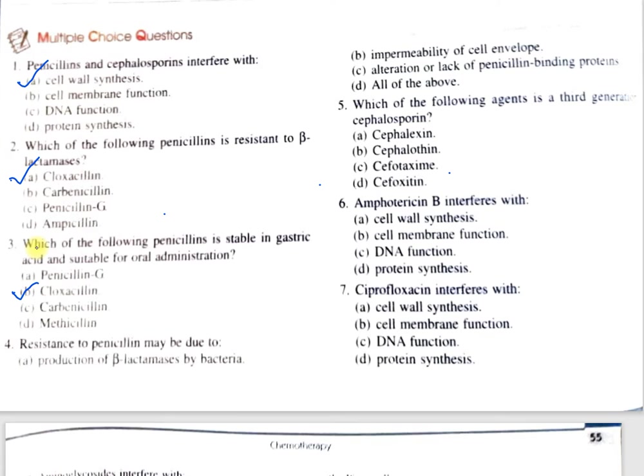Question number 4: Resistance to penicillin may be due to — option A, production of beta-lactamases by bacteria; B, impermeability of the cell wall; C, alteration or lack of penicillin binding proteins; D, all of the above. All options are correct, so the answer is option D, all of the above.